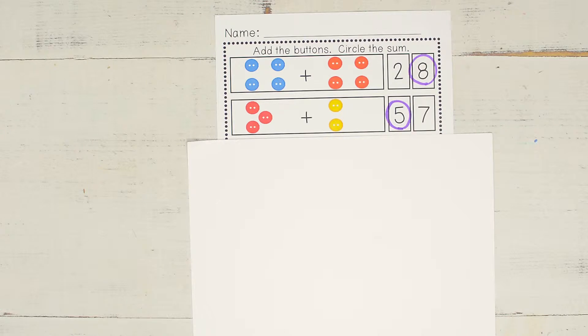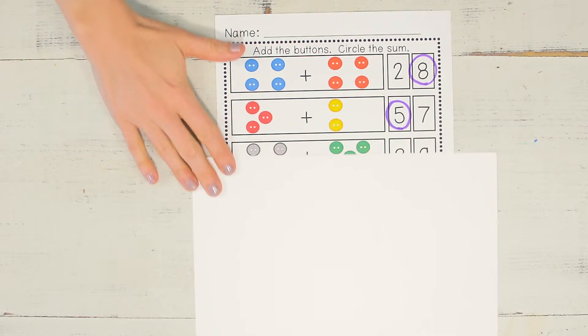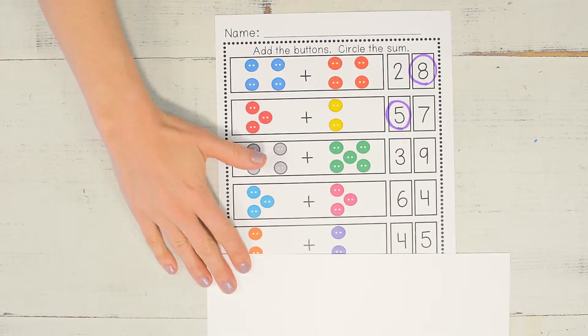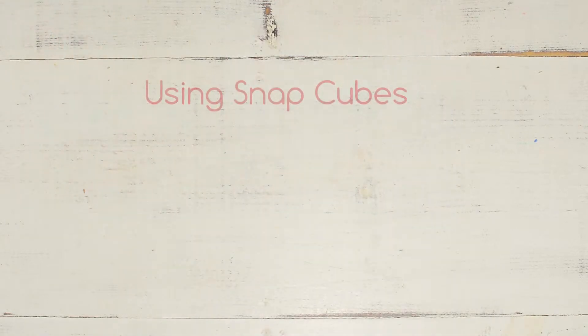Now it's your turn to finish the activity by counting the buttons and circling the correct answer using snap cubes.